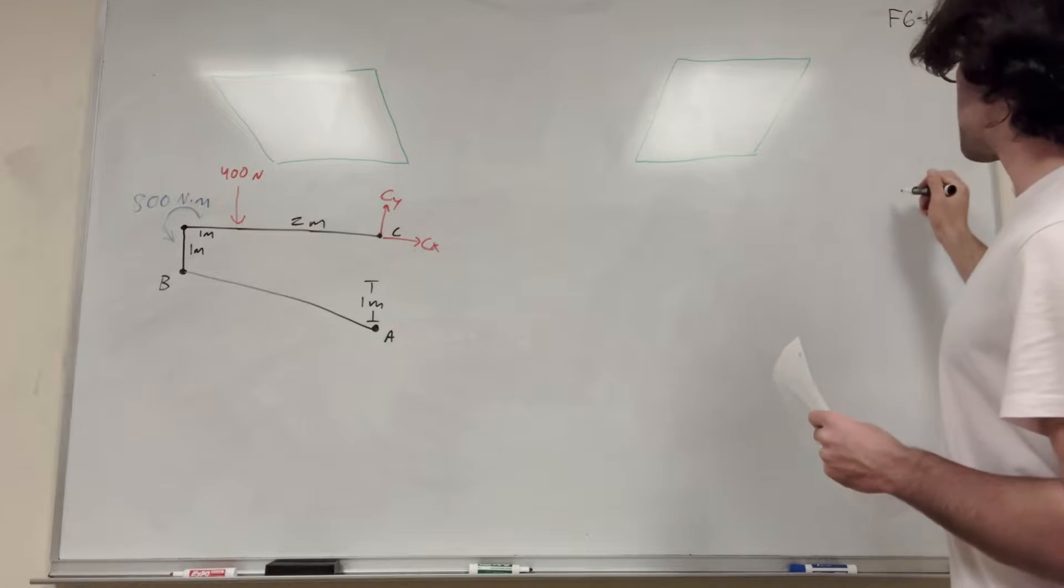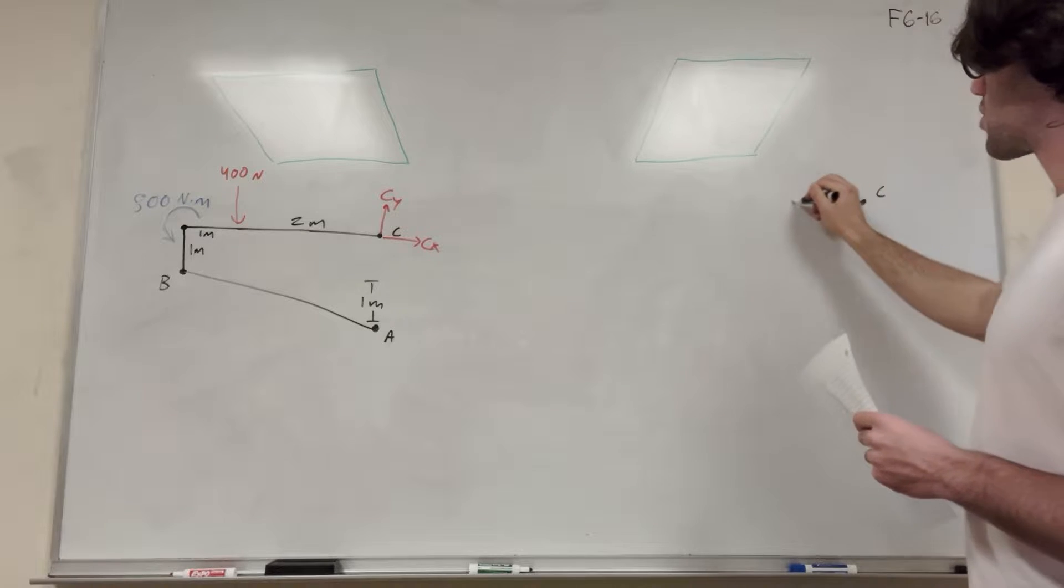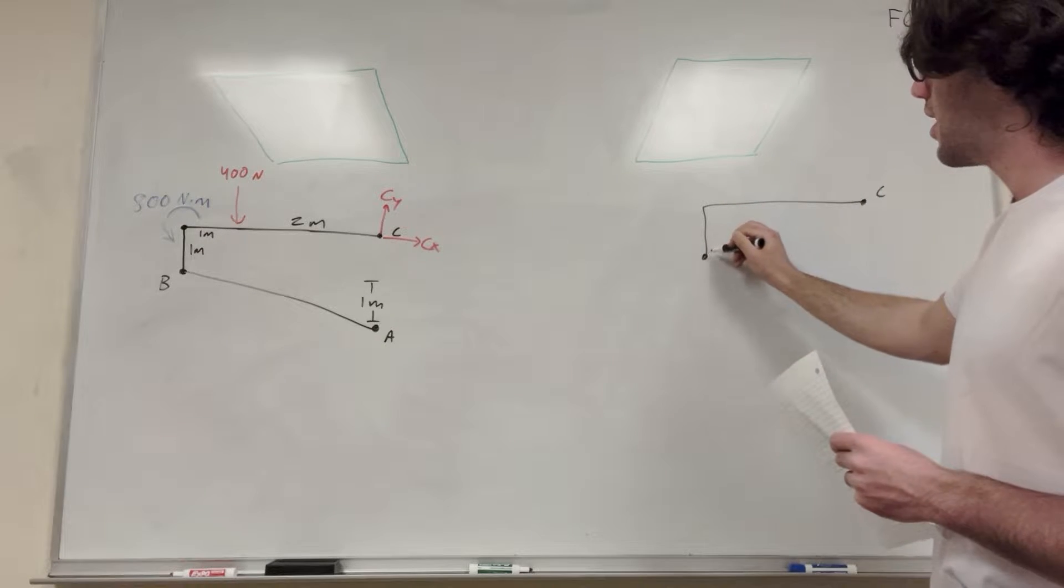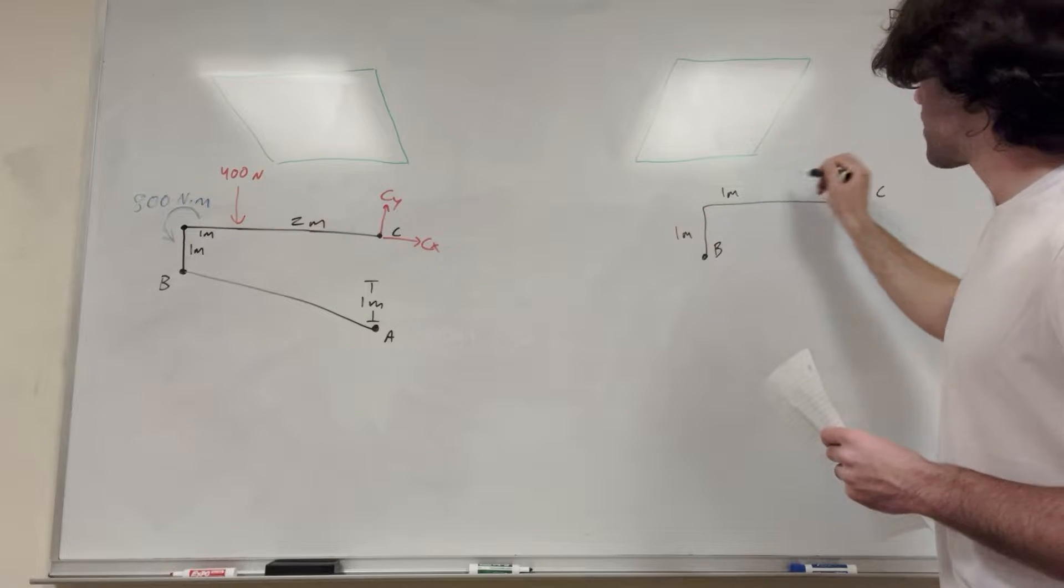So now we're just looking at BC, which is this L-shaped rod. So we have C here, goes over about three feet and then down about one foot. And then there's B. So of course this is one meter, this is one meter, this is two meters.